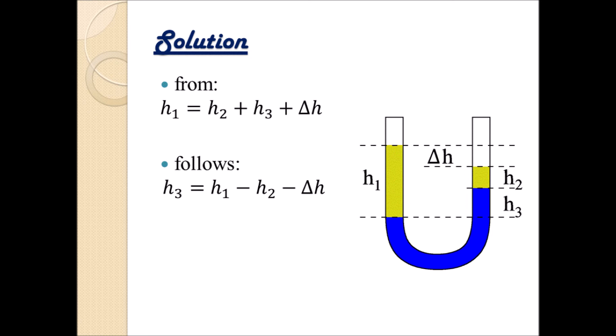And since we didn't want knowledge about the height h but the volume, we can go back from the height to the volume by introducing again the cross-sectional area. Every time we see this height with an index of 1, 2, or 3, we can substitute it by volume, respective volume of course, divided by the cross-sectional area A.